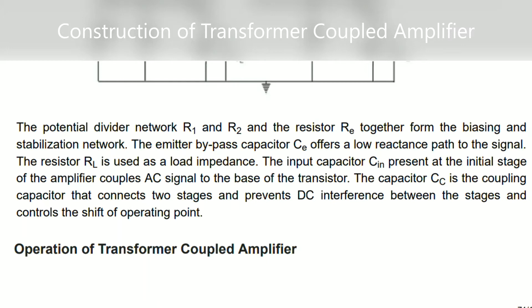The potential divider network is formed by resistors R1 and R2 together, which provide transistor biasing and stabilizing the network. The emitter capacitor C-E is used for bypassing current. The input capacitor C-in provides coupling between the input signal and the base of the transistor. Here we are using a transformer instead of a coupling capacitor, so it is called transformer coupling.